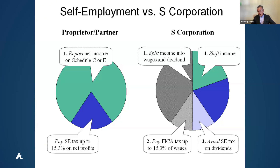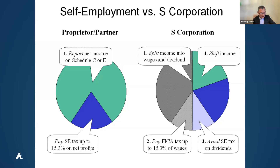Most accountants, if you ask them, say fifty percent. But the reality is the IRS never said fifty percent, never said twenty-five percent, never said ten percent. The IRS uses this word called 'reasonable salary' — it's a subjective word. Sometimes ten percent is fine, as long as the client agrees.